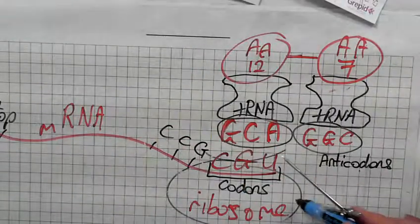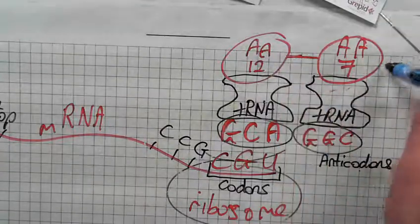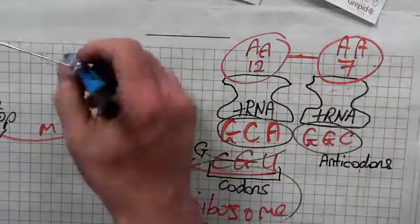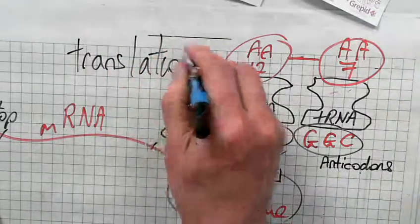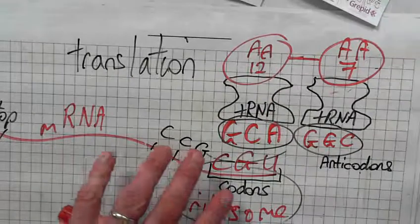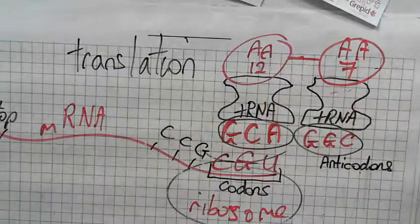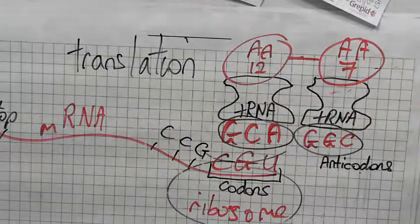Where the messenger RNA is read and what's made? A protein. This is translation. The messenger RNA is read by the ribosome and a sequence of amino acids are joined together to make a protein.